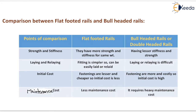For maintenance cost: flat footed rails have less maintenance cost, but bull headed or double headed rails require heavy maintenance cost.